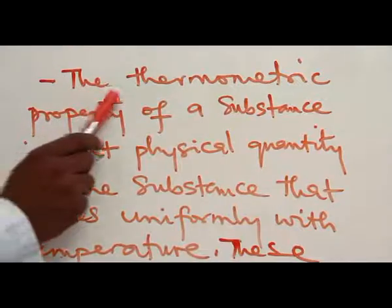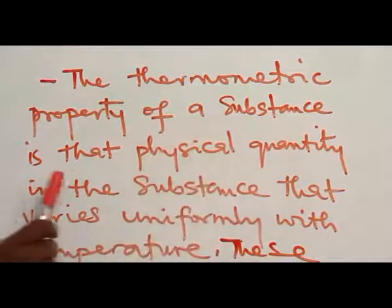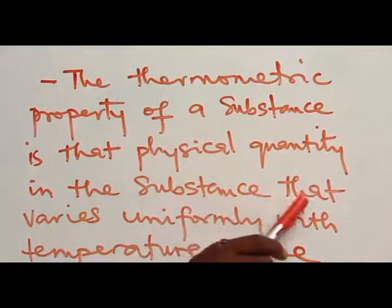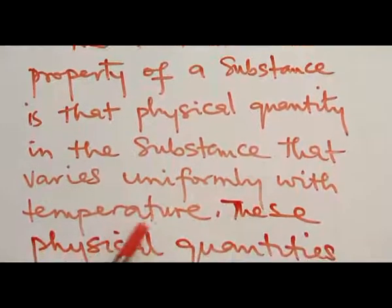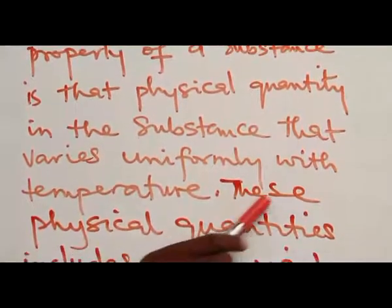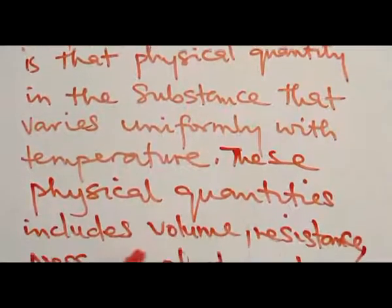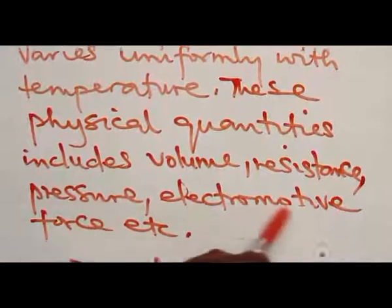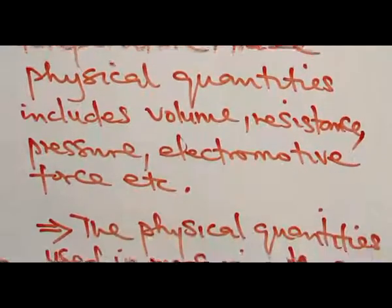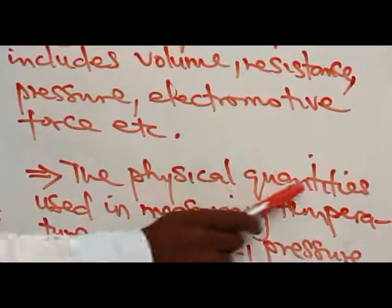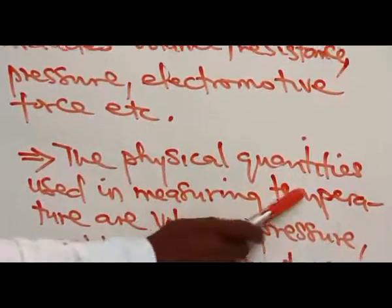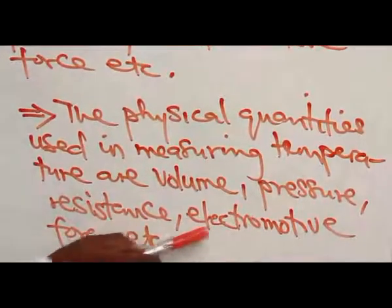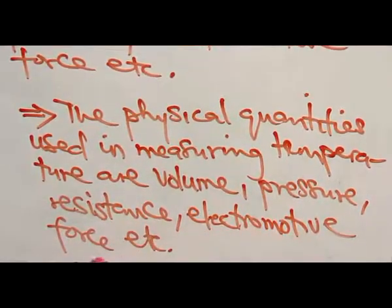The thermometric property of a substance is that physical quantity in the substance that varies uniformly with temperature. These physical quantities include volume, resistance, pressure, electromotive force, etc. The physical quantities used in measuring temperature therefore are volume, pressure, resistance, and electromotive force.